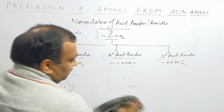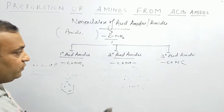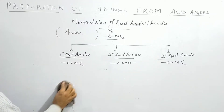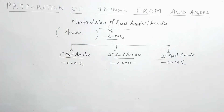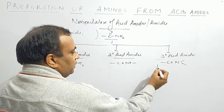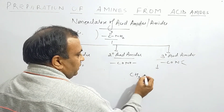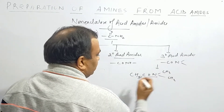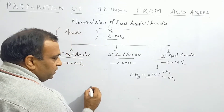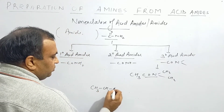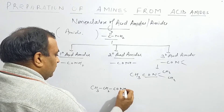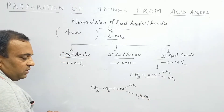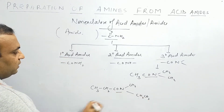Now in the last part we will discuss the IUPAC and common names of Tertiary Acid Amides. CH3-CO-N-(CH3)2 has the CoN functional group, so this is a tertiary acid amide. Another example: CH3-CH2-CO-N-(CH3)2 is also tertiary — CoN is the functional group.